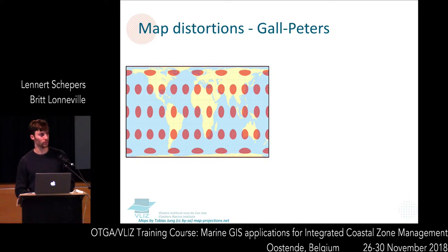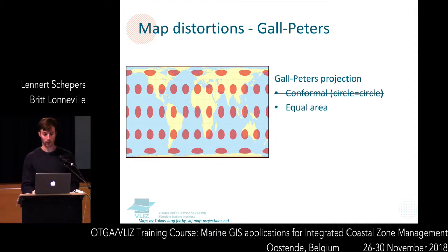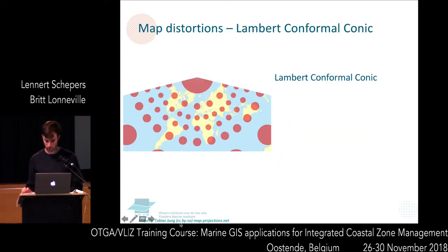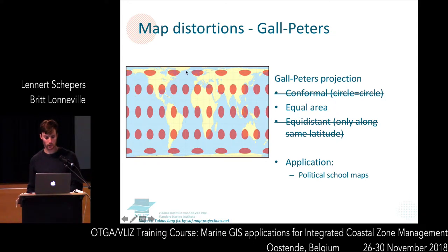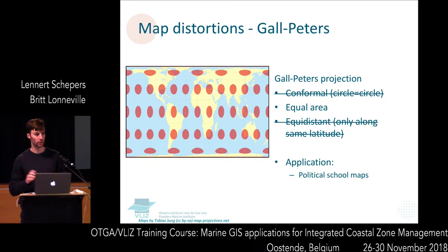The second map is the Gall-Peters projection. The circles are no longer circles, so it's not conformal. But the areas stay the same — it's an equal area projection. As you can see, Greenland is now a lot smaller than in the Mercator projection. The distances are also not the same. This projection is used as school maps because the relative sizes of countries in the world stay the same.